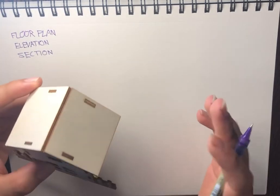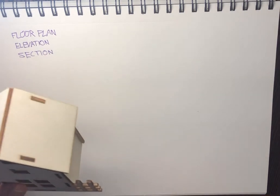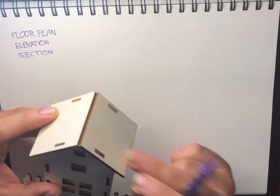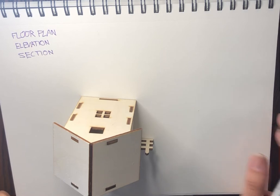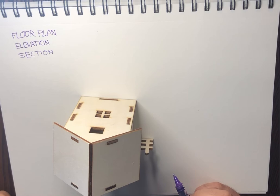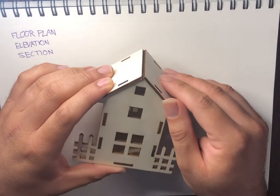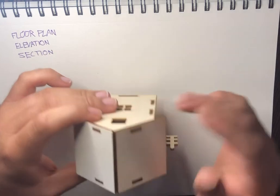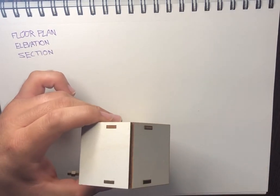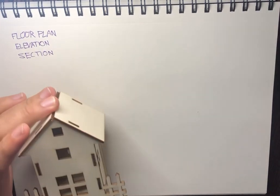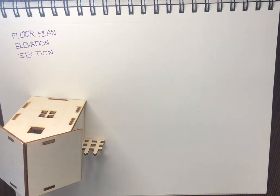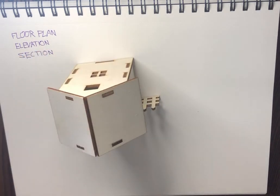I have this house and I want to show it on paper. This is a 3D, three-dimensional model, but I need to show it on a two-dimensional paper. So I need to find the two-dimensional drawings. First of all, let's talk about the floor plan. What is a floor plan? A floor plan is a drawing that we are looking at from the top of the building.